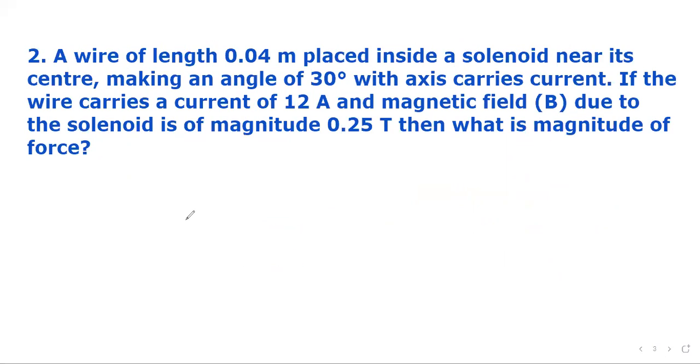Now, let's go to the next question. A wire of length 0.04 meters placed inside a solenoid near its center making an angle 30 degrees with axis, carrying current. If this is the axis, so the wire is like this. If the wire carries a current of 12 amperes, so the information we can note: I equals 12 amperes, theta equals 30 degrees.